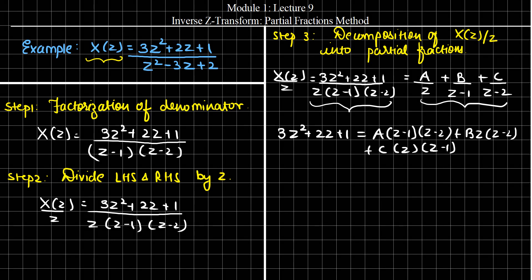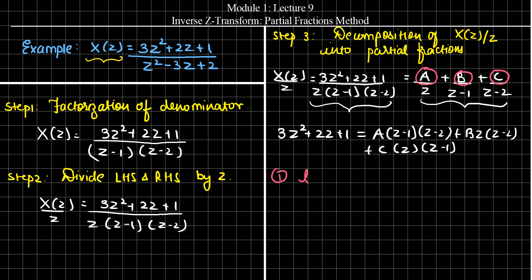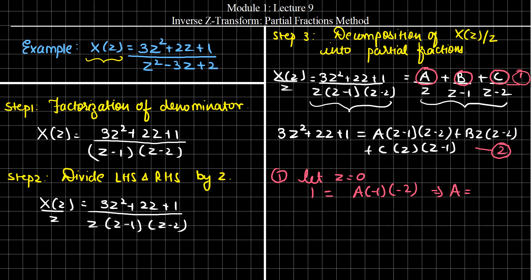Now we need to find the values of A, B, and C. Initially, let Z equal to 0. Therefore, the left-hand side becomes 1, which equals A·(-1)·(-2). The B and C terms become 0. Therefore, the value of A is equal to 1/2.